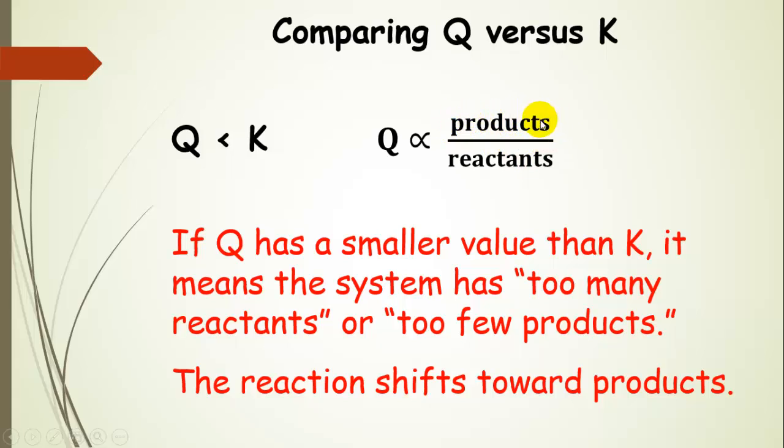Either way, you can think about it. So you can either think about not enough products or too many reactants. But both of those ways of rationalizing it will help you figure out which way the reaction is going to go when Q is less than K. So I like to write out this expression for myself to remind myself, products over reactants.